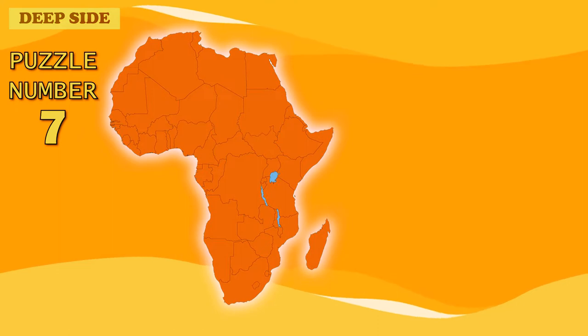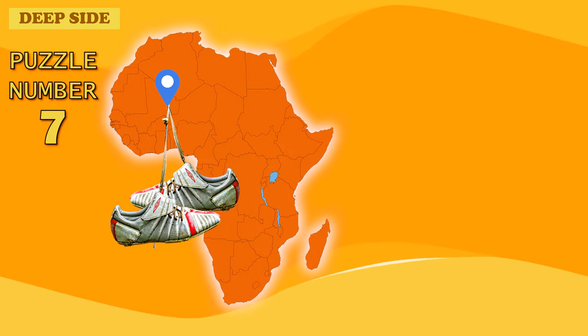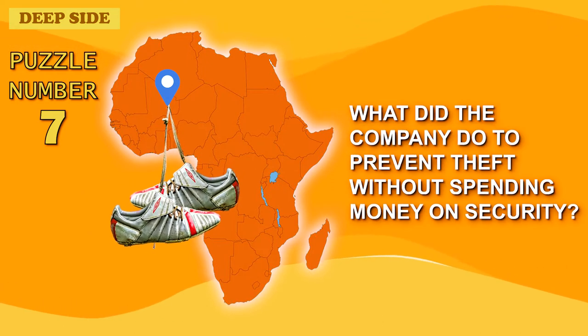Puzzle number 7. In Africa, Nike has encountered a problem. A lot of their sneakers were stolen from the factory. What did the company do to prevent theft without spending money on security?